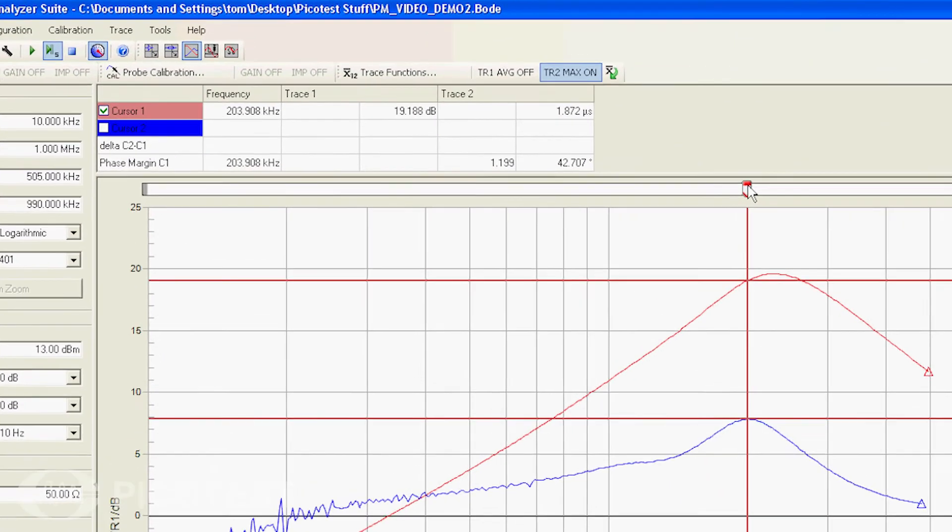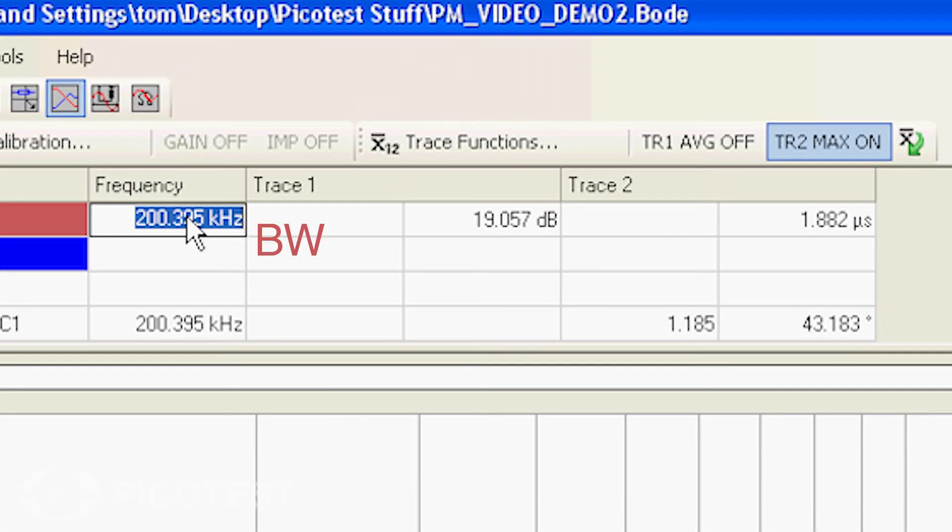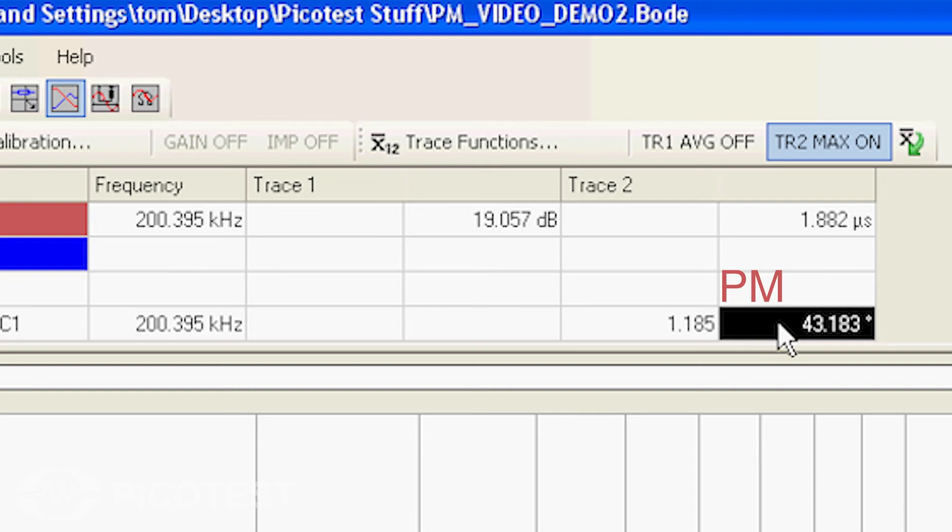From this measurement, we can see our system has a bandwidth of about 200 kHz and a phase margin of 43 degrees.